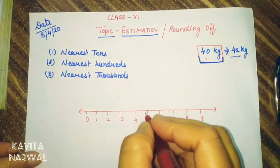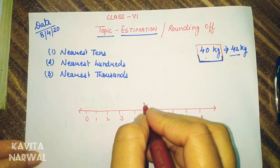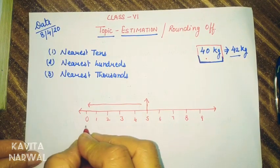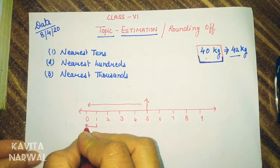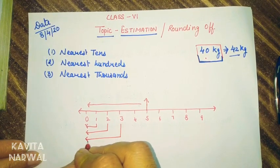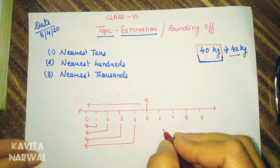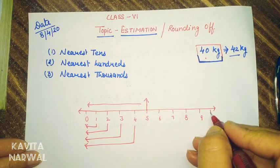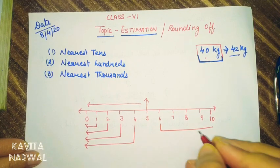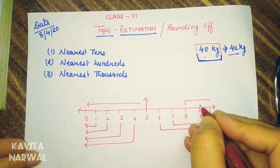Now, how to estimate a number? Here one thing we have to remember: if any number is less than 5, that number converts into 0. For example, 1, 2, 3, 4 all convert into 0. And if any number is more than 5, then we take its next digit — that means plus 1. So 6, 7, 8, 9 all round up to 10.